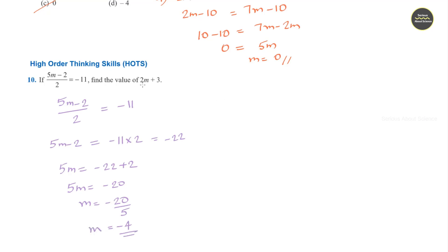Now we can substitute the value of m in the equation 2m plus 3. So it becomes 2 times -4 plus 3. It becomes 2 into -4 is -8 plus 3. -8 plus 3 is -5.